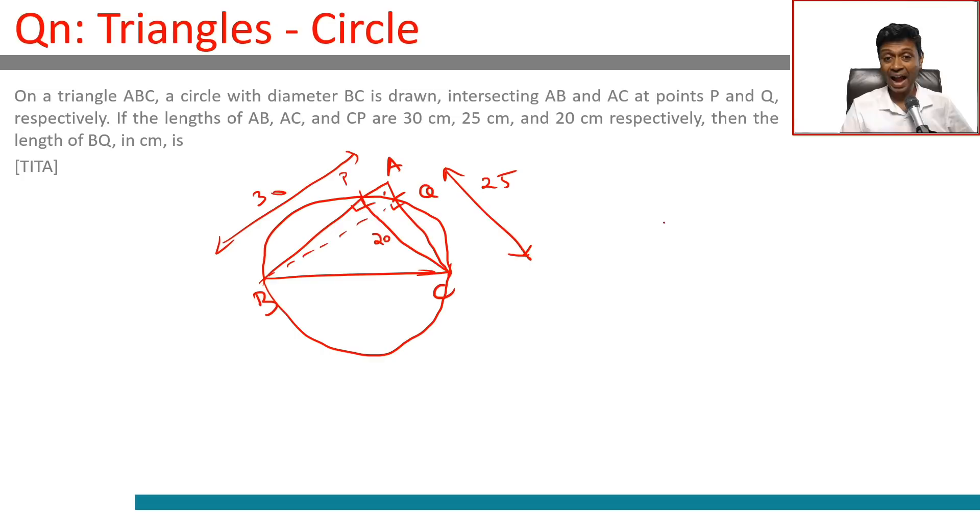So think about triangle PAC. If you look at this triangle, this is 90 degrees. CP is 20, AC is 25. This is a ratio of 4 is to 5, or this should be 3, 15, 20, 25. It's a Pythagorean triplet.